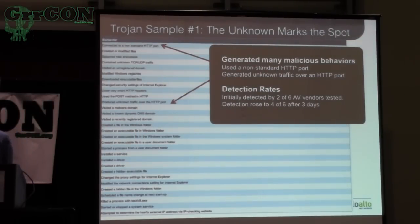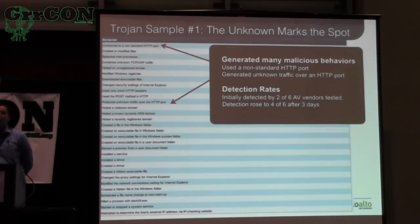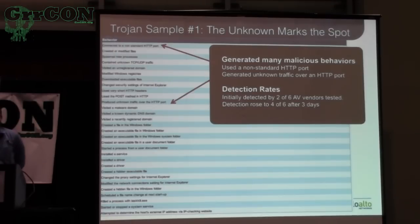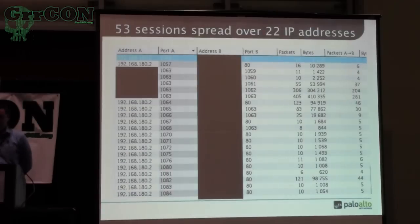We also did a couple of experiments to see what traffic from some of these malware samples looks like if you're viewing it through the firewall's point of view. We took a couple of samples. Starting with Trojan Sample Number One — this gives you an overview of the types of behaviors we observed. It lit up our system like a Christmas tree; basically every behavior we look for, this malware did. Anything from messing with security and proxy settings of the web browser, creating and installing drivers and services, starting executables and processes from the user document folder — things typically not found in legitimate software.